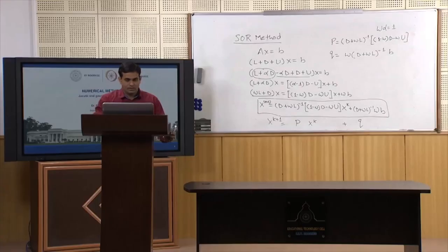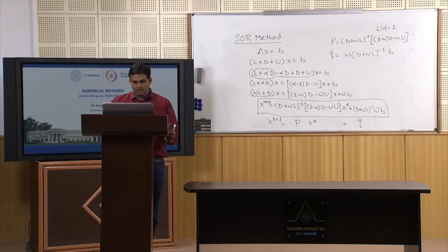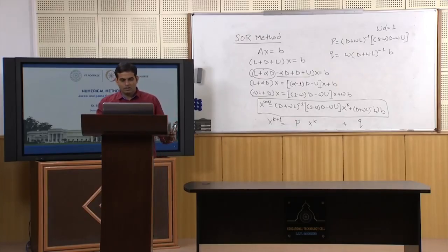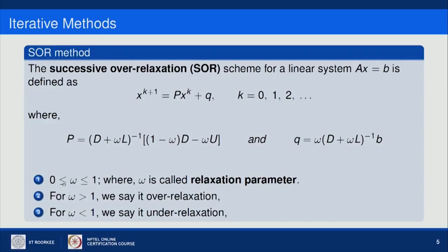This is called the successive over-relaxation iterative scheme. The iteration matrix P is given by (D + ωL)^{−1}(1−ω)D − ωU), and the column vector Q is given by ω(D + ωL)^{−1}b. If omega is between 0 and 1, omega is called the under-relaxation parameter. If omega is greater than 1 it is called over-relaxation.